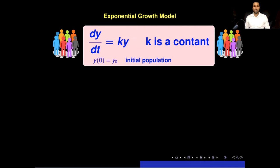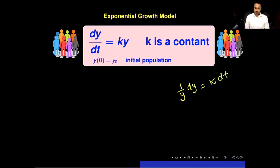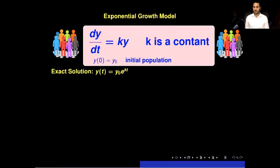Next we would like to solve this differential equation and find the values of y in terms of t. There are basically two techniques to solve a differential equation. The first is an analytical technique using tools from continuous mathematics such as integration to find the solution explicitly. For this differential equation, if I separate the variables by multiplying dt on both sides and moving y to the other side, I get (1/y)dy = k dt. Integrating both sides and simplifying gives the exact solution: y(t) = y₀ · e^(kt).